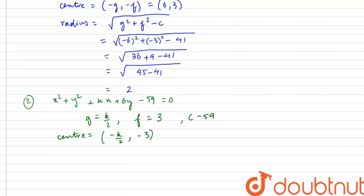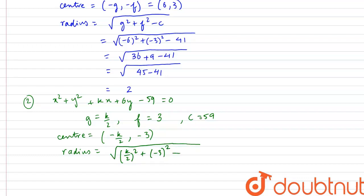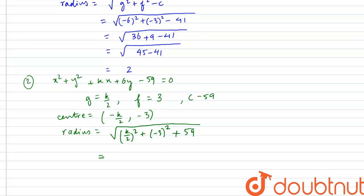The radius of the second circle is √(g² + f² − c) = √((k/2)² + (−3)² − (−59)) = √(k²/4 + 9 + 59) = √(k²/4 + 68). Let us call this r2, and the radius of the first circle r1 = 2.